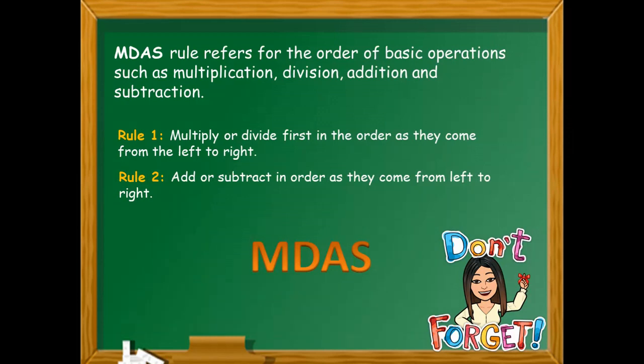Kung merong apat na operations sa isang problem, of course, ang mauna ay mag-multiply, sunod mag-divide, sunod mag-add, at ang huli ay ang mag-subtract. Pero kung may tatlong operation lang wala doon sa division, you're going to start with multiplication, addition, or subtraction.